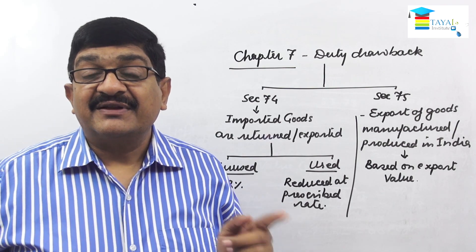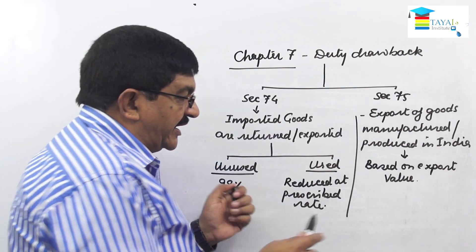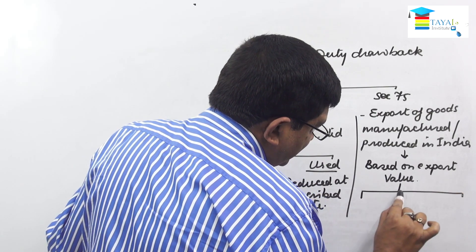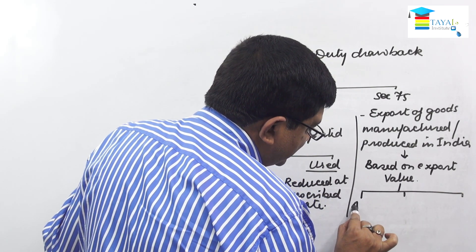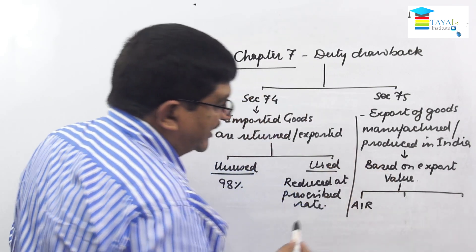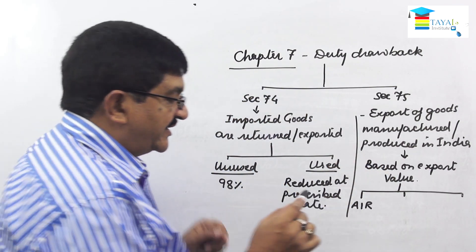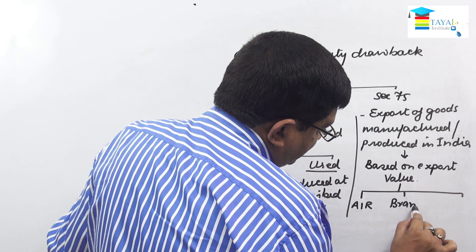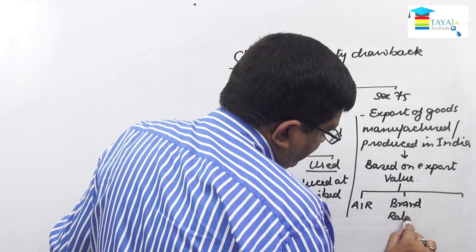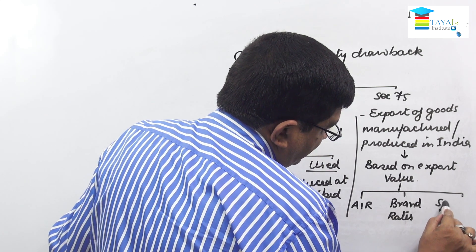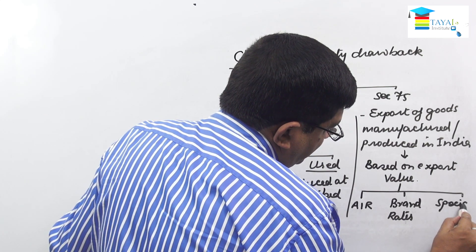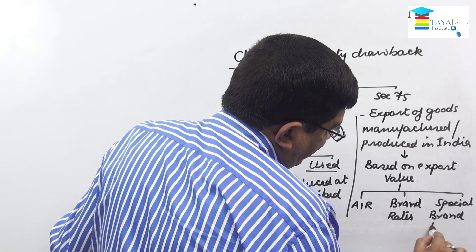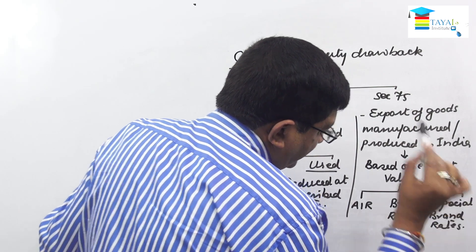Under section 75, three types of rates are available. The first is All Industry Rates (AIR). The second is Brand Rates. The third is Special Brand Rates. So three types of rates are possible under this section.